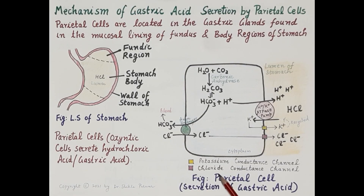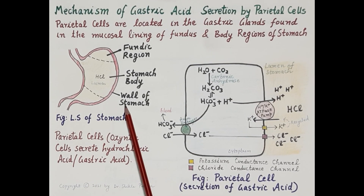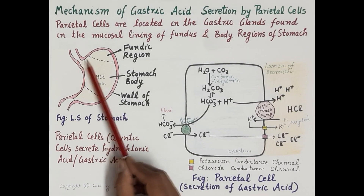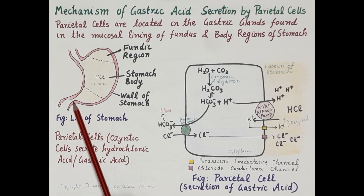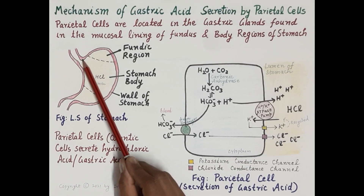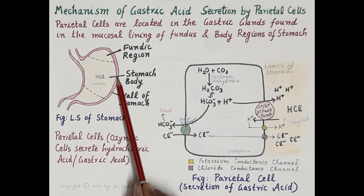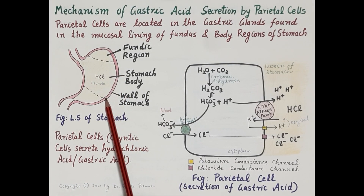This slide explains the mechanism of gastric acid secretion by the parietal cells. Parietal cells are also called oxyntic cells, and these are the cells that produce gastric acid or hydrochloric acid. Parietal cells are located in the gastric glands, which are found in the mucosal lining of the fundus and body region of the stomach.